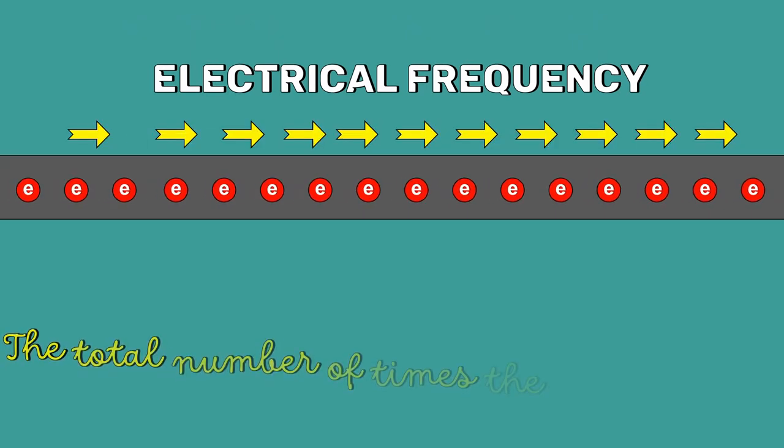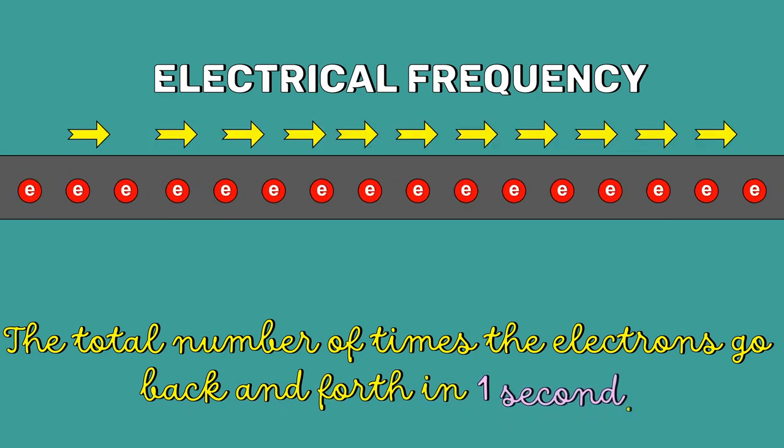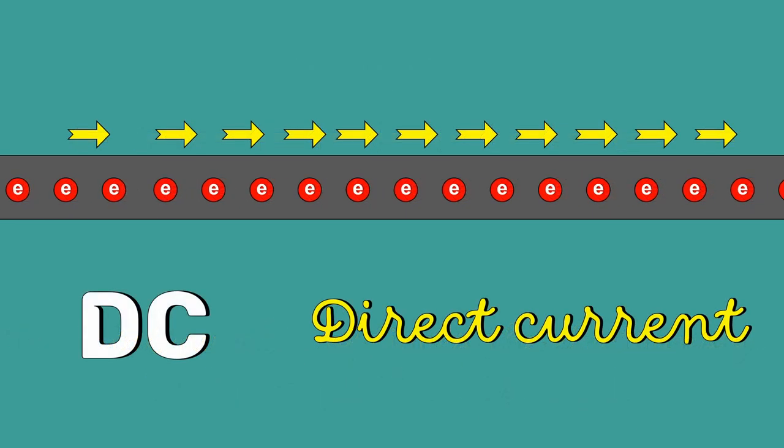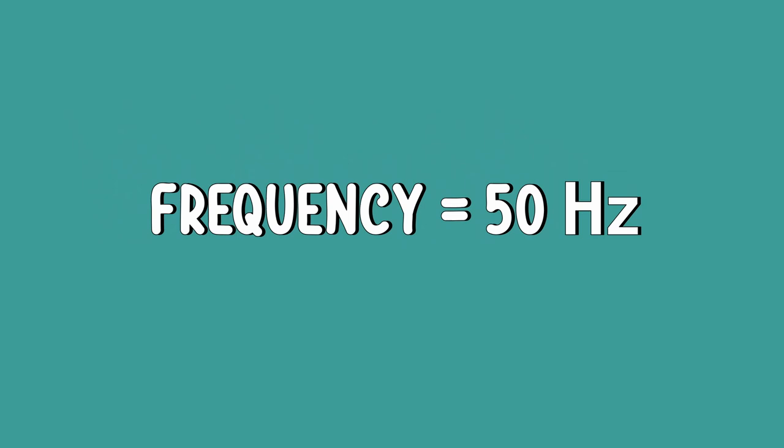One of the important terms of electricity is frequency. The electrical frequency means the total number of times the electrons go back and forth in one second. Since in DC the electrons don't change their direction, the frequency is zero. The value of AC frequency varies depending on the country — approximately 40 countries use 60 Hz frequency while the rest typically run on 50 Hz.